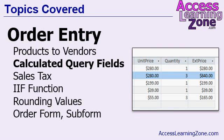Then we're going to learn about calculated query fields. In order to calculate the total for our line items, we need to be able to multiply unit price times quantity. You buy two items at $10, that's $20 — so we're going to learn how to do calculations inside our queries.